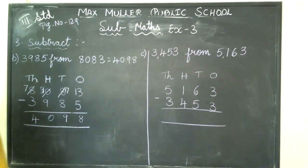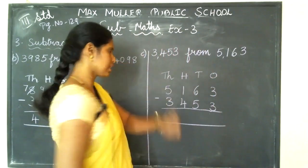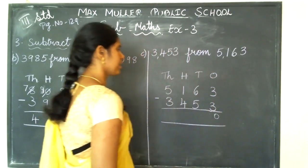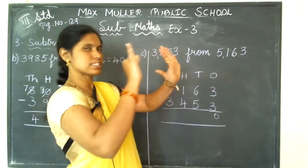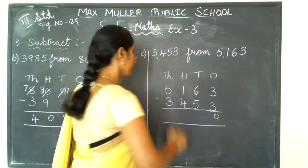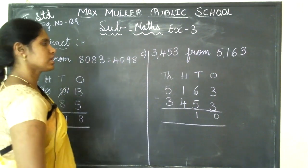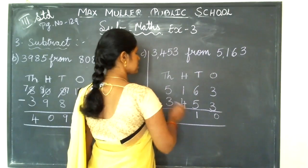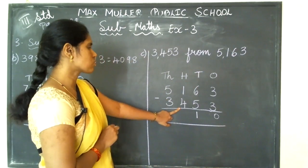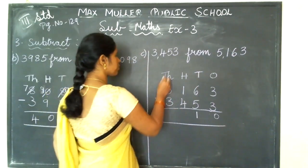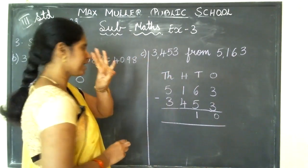We will start from the ones place. 3 minus 3 — from 3 if I minus 3, how much? 0 — write 0 here. Next, in the tens place: 6 minus 5 — from 6 if I minus 5, how much? 1 — write 1. Next, in the hundreds place, what is the number? 1 minus 4 — from 1 can I minus 4? From a smaller number can I minus a bigger number? No. So what I am going to do? I will go to the thousands place and borrow 1. From 5 if I minus 1, how much? 4 — write 4 here.